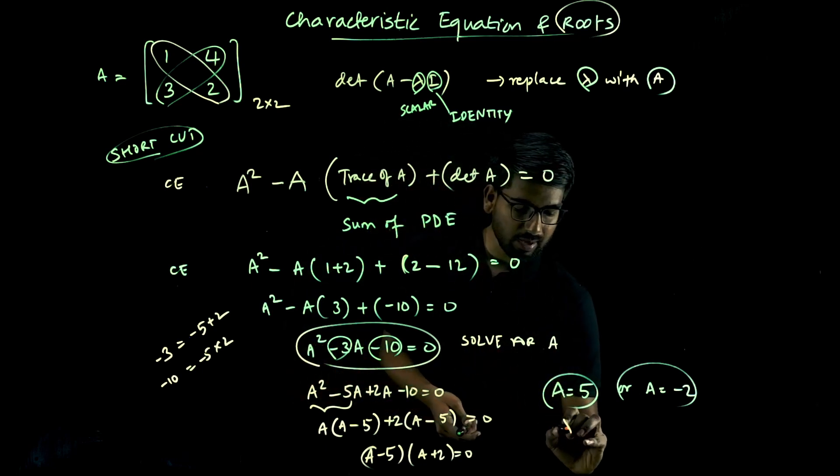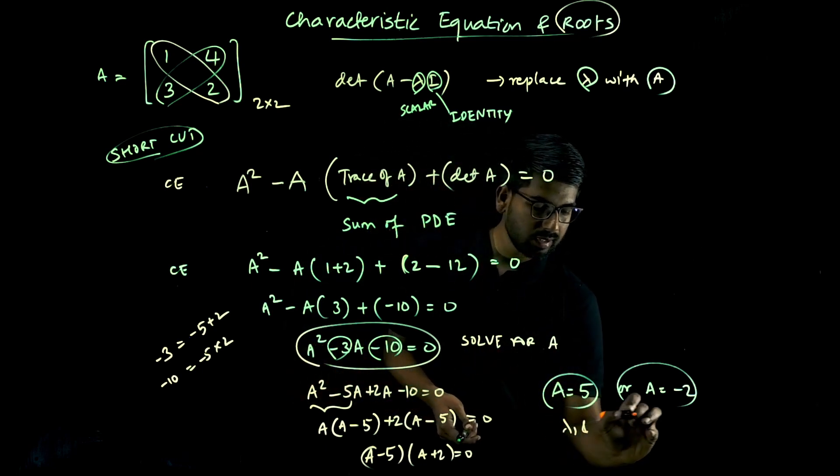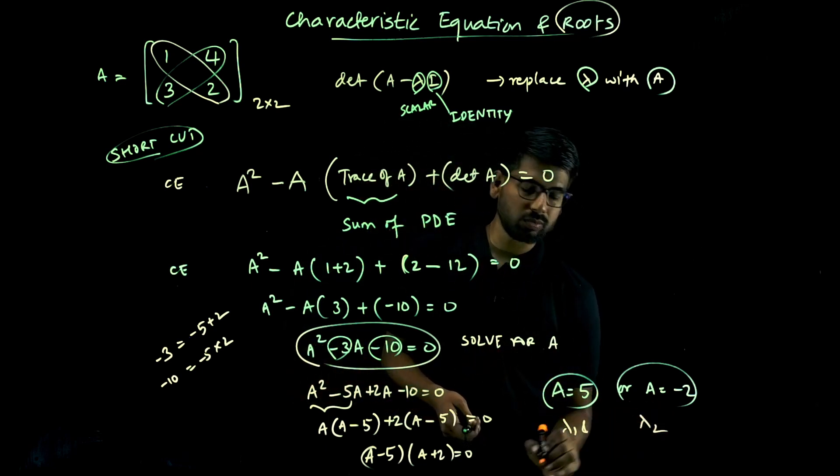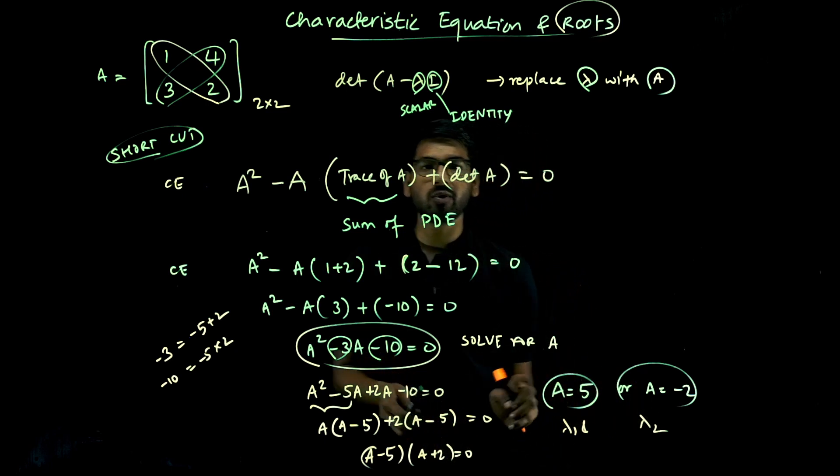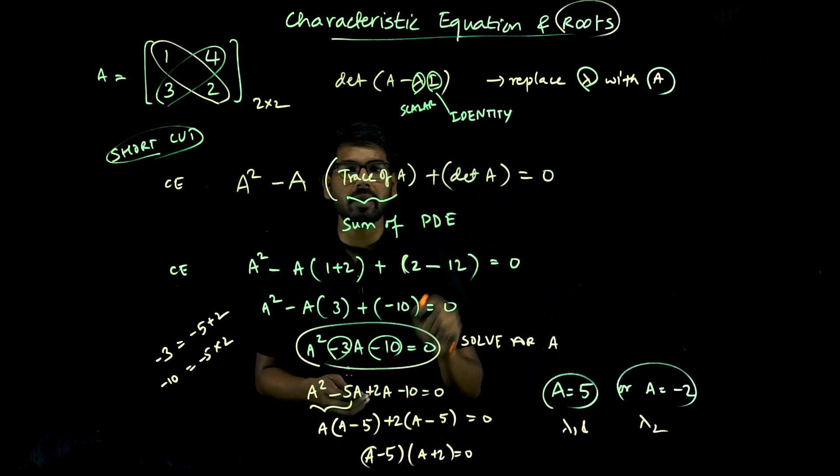The exam will usually ask for lambda 1 and lambda 2. Characteristic roots are called lambda 1 and lambda 2.